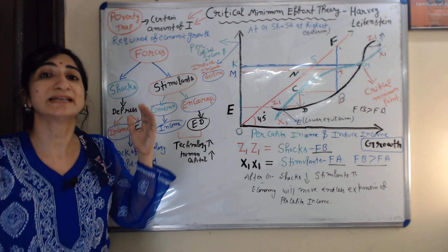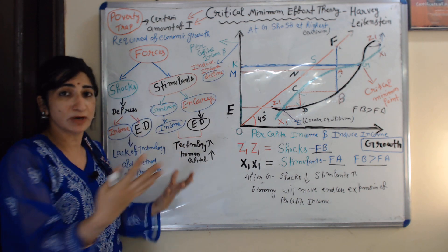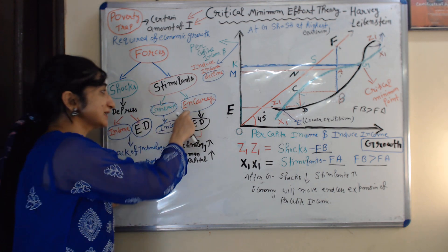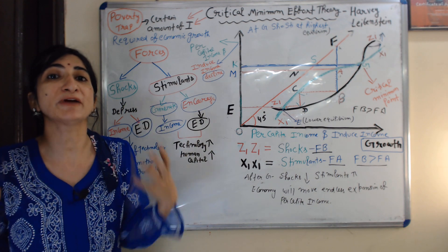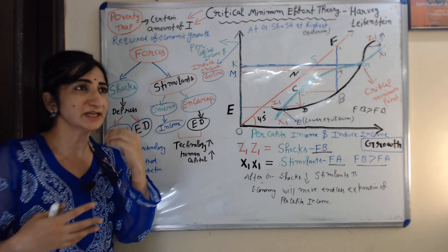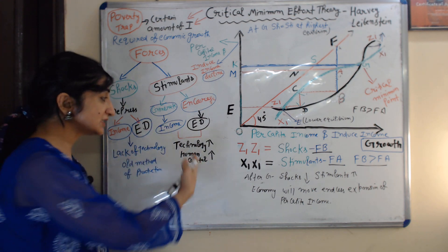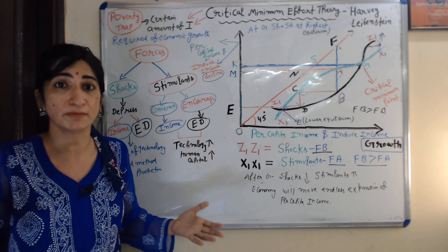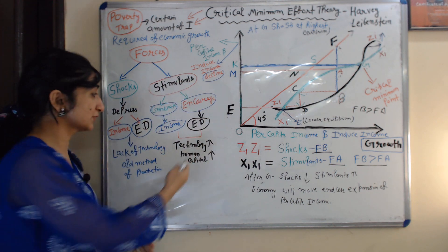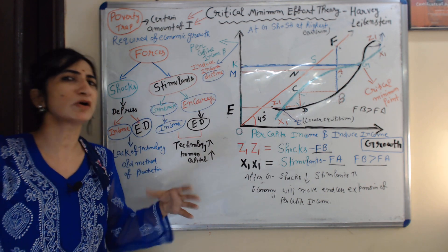Shocks are those that depress income as well as economic development of any country. On the other hand, stimulants are just opposite to shocks — stimulants are income generating forces. For example, if a country has technology and human capital, and these continue increasing, the country can generate a lot of income. Stimulants are income generating forces, for example technology and human capital; and shocks are income depressing forces, for example lack of technology and using old methods of production.